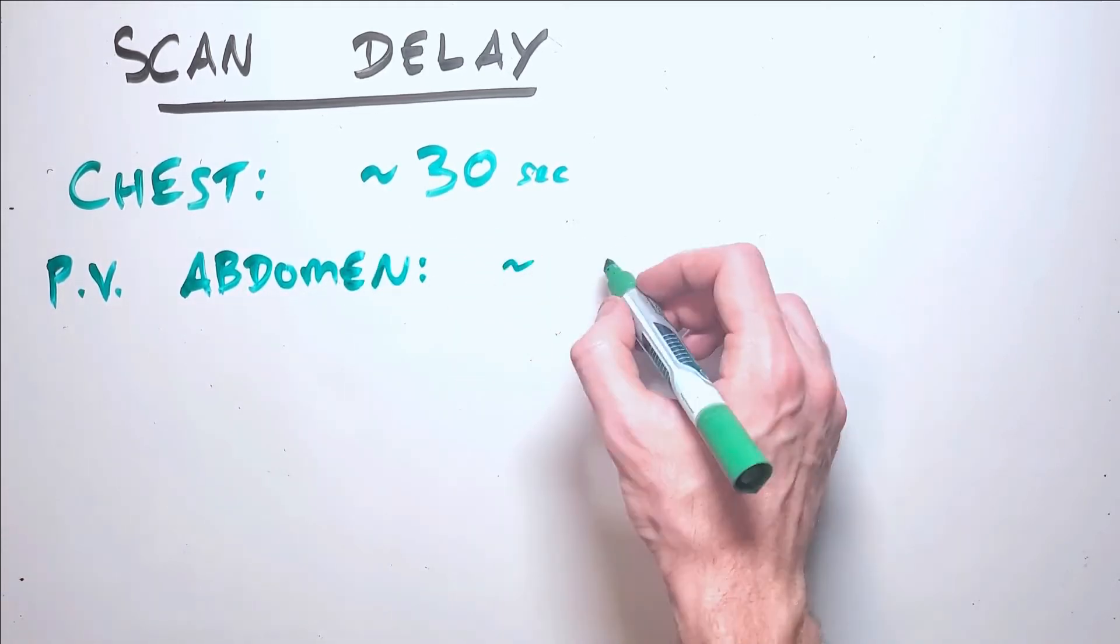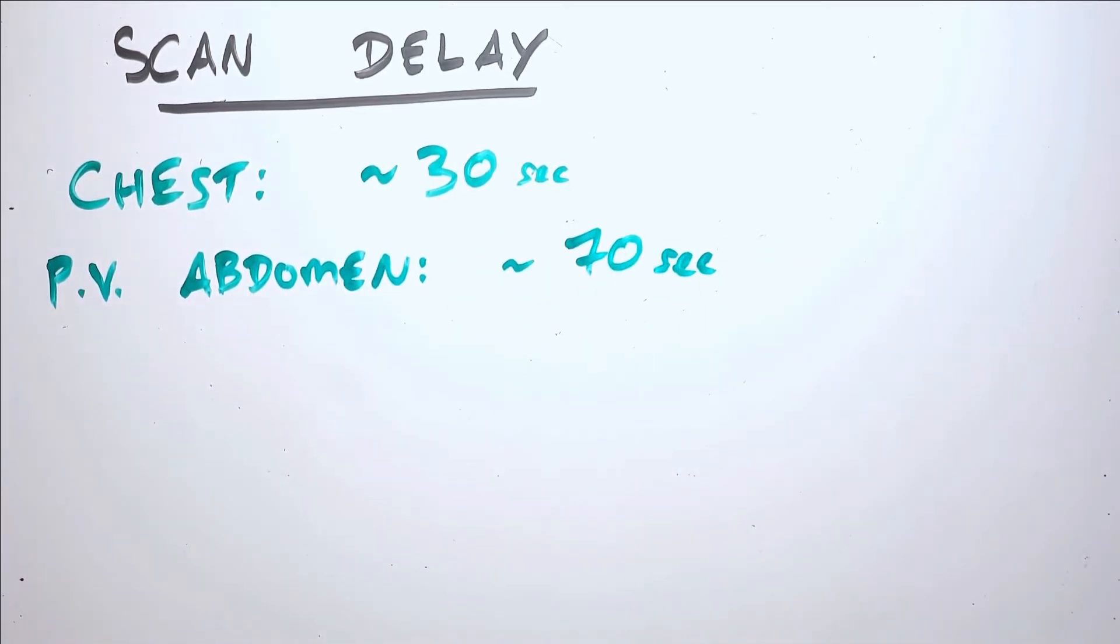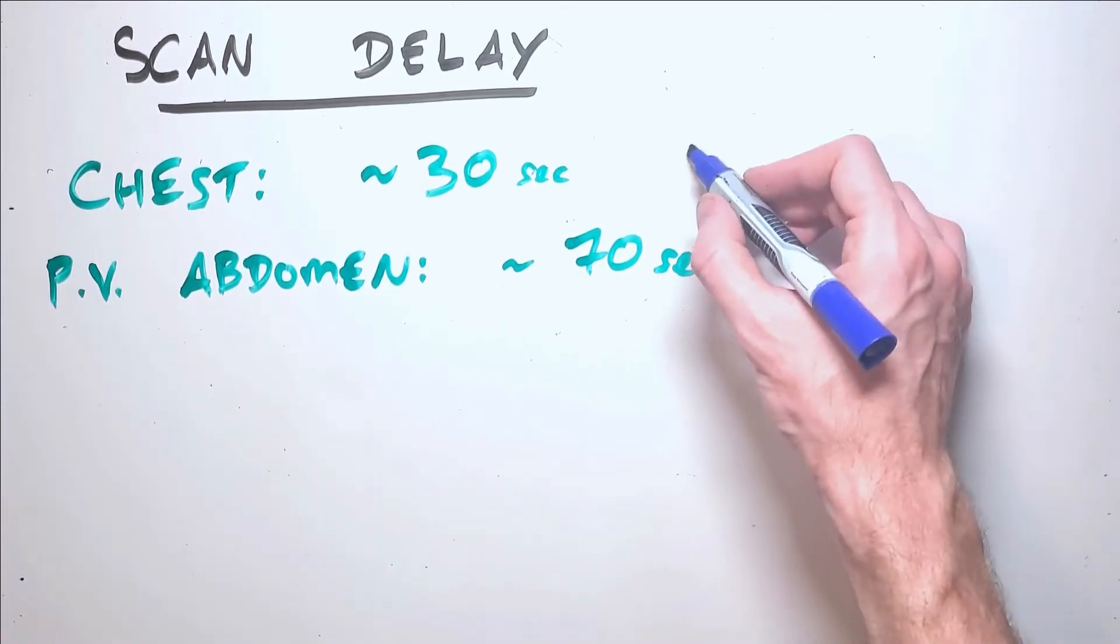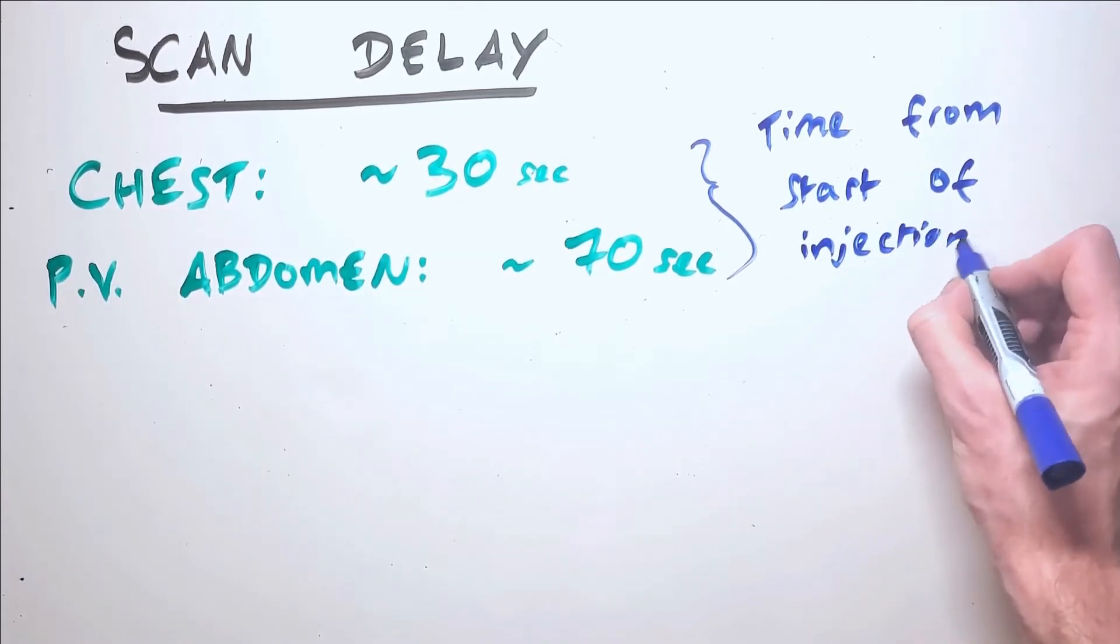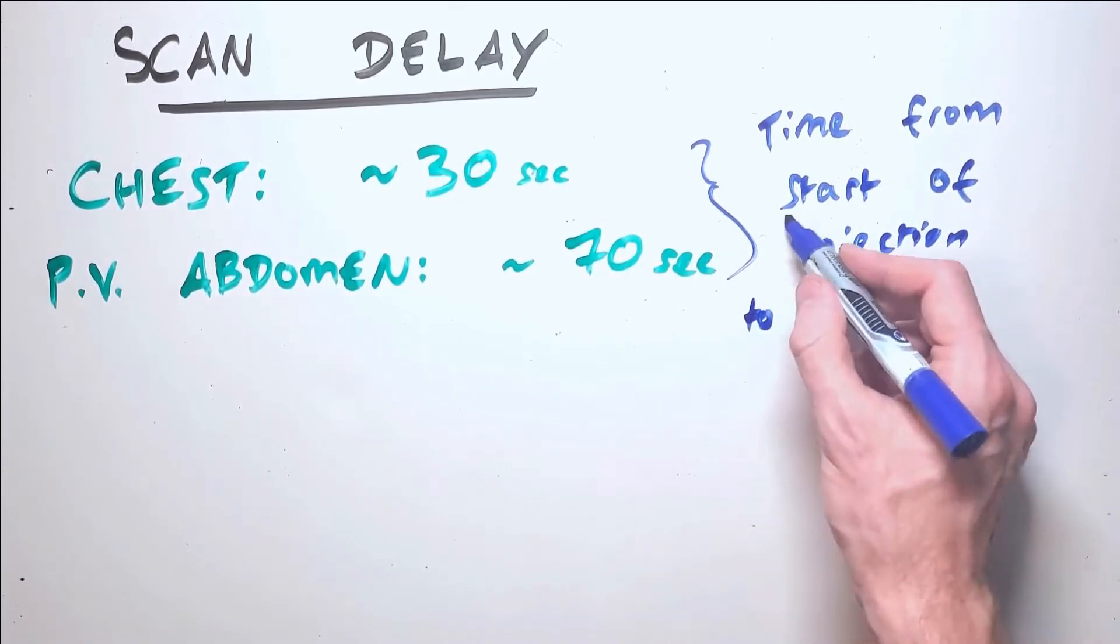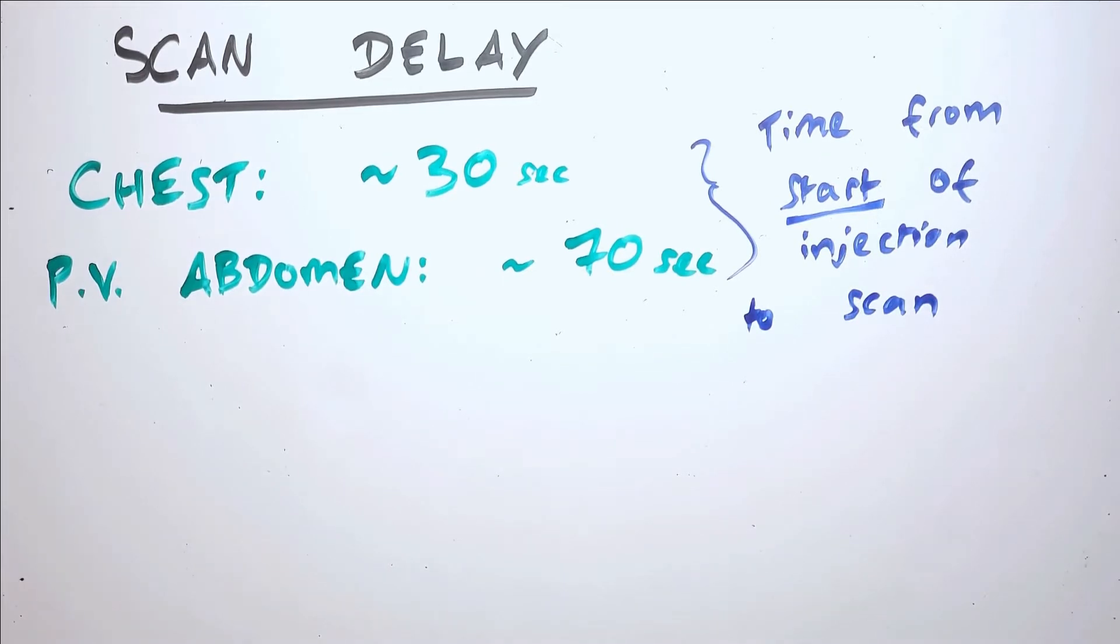A typical abdomen and pelvis scan will start around 70 seconds after the start of an injection because this is how long it takes the contrast to reach the portal venous system. These different timing protocols are referred to as phases of contrast enhancement and you can dive more into the differences in phases of enhancement when you look into each individual scan protocol and body area.